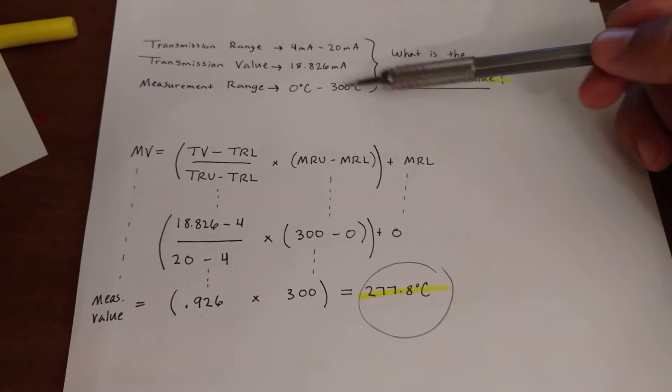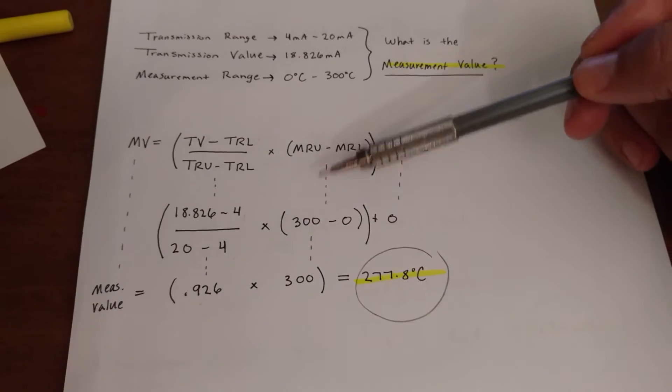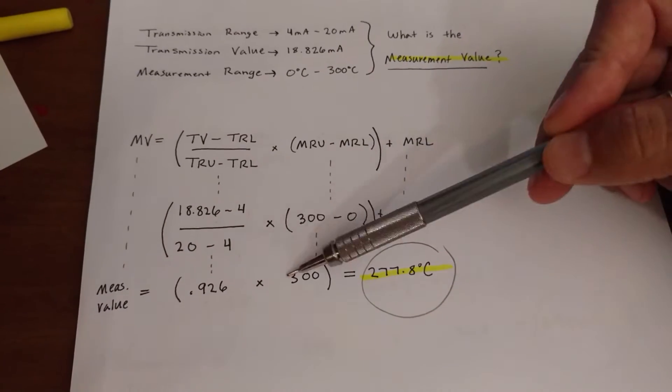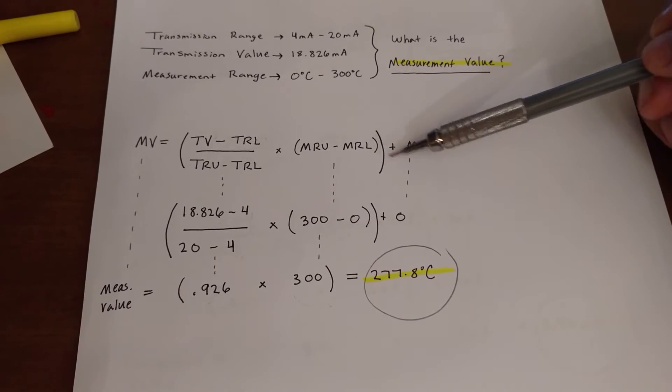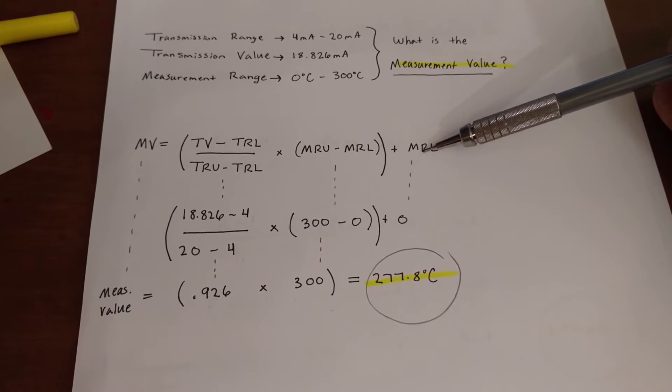times whatever the measurement range upper range value is minus your measurement range lower value. And in this case, that's going to be 300 degrees Celsius and 0 degrees Celsius. So now you're going to multiply it together. And in this case, we didn't add anything because our measurement range lower value is 0.